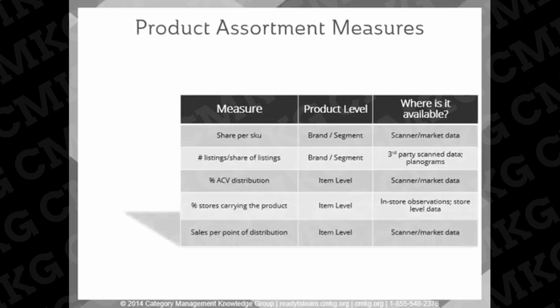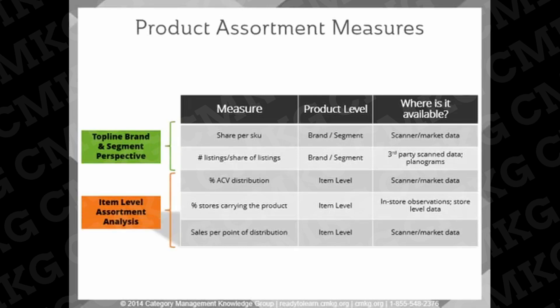Now that you have an understanding of overall product assortment strategies, it's time to understand the key measures. There are many different ways to measure product assortment, including share per SKU, number of listings, share of listings, percent of ACV distribution, percent of stores carrying the product, and sales per point of distribution. The first two measures give you a top-line brand and segment perspective, while the bottom three measures relate to item-level assortment analysis. Scanned sales data is where most of the measures are available, while in-store audits and planograms may be other sources for product assortment information.